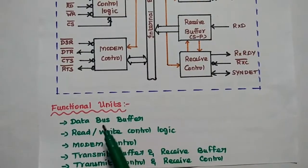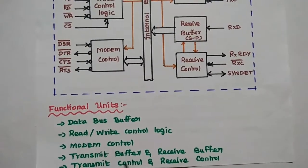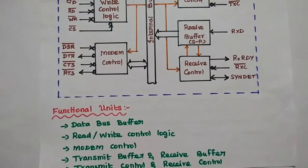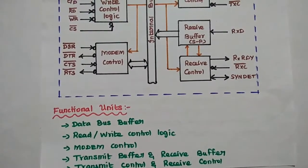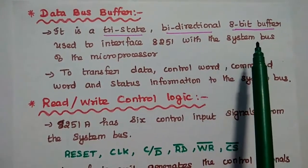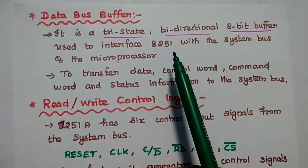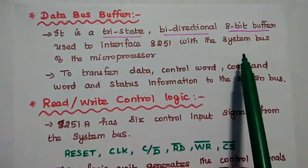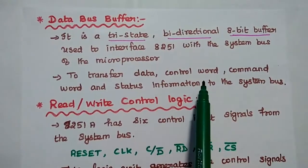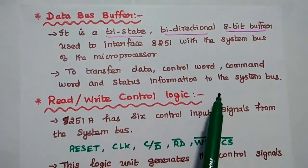The functional units connected via the internal bus are: data bus buffer, read/write control logic, modem control unit, transmit buffer, receive buffer, transmit control, and receive control. The data bus buffer is a tri-state, bi-directional 8-bit buffer used to interface the 8251A with the system bus of the microprocessor. It is mainly used to transfer data, control words, command words, and status information to the system bus.